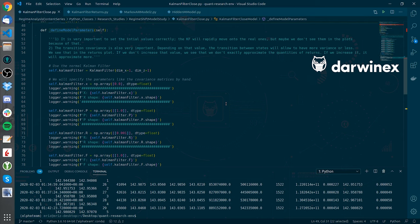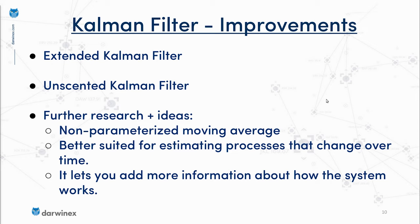The Kalman filter then does an update-predict loop in which it takes the actual observation, includes it, and then makes the following prediction based mostly on that actual observation. Finally, it can be very interesting to analyze how Kalman filters differ from moving averages and how they can be suited for financial time series analysis. You have all the ingredients to make that research work if you look at the different implementations in the GitHub repository of the quant research environment.